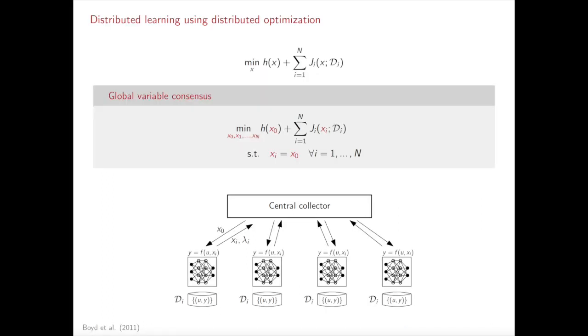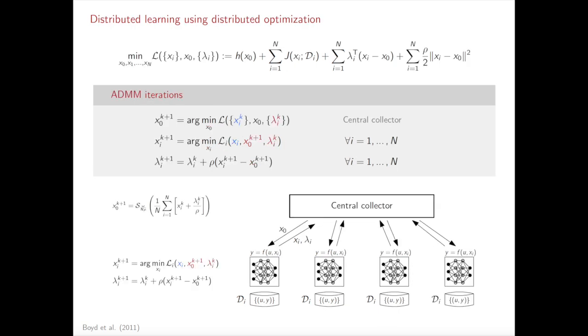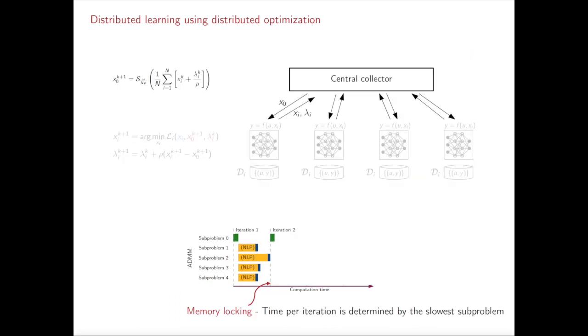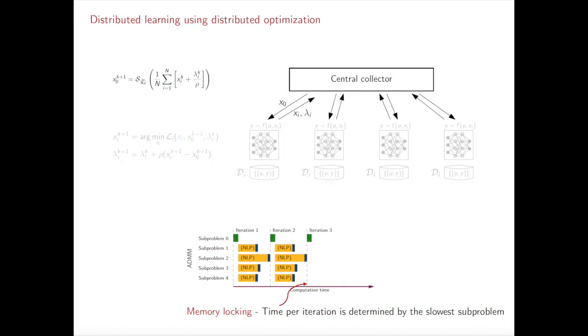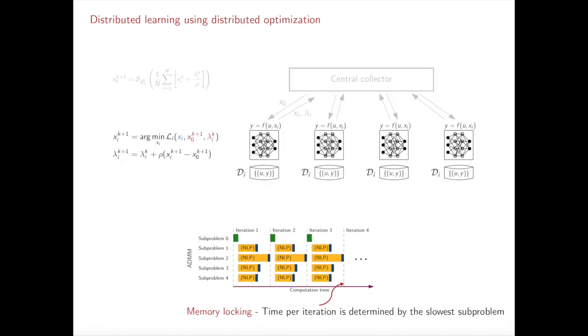Now consider a distributed learning problem where we want to learn a common inferential model using local data sets across multiple worker nodes. Alternating directions method of multipliers, ADMM, is a simple yet powerful decomposition coordination framework that allows one to decompose such problems into smaller sub-problems that are coordinated by a central server.